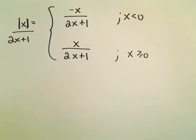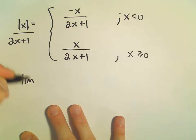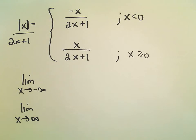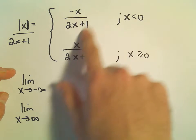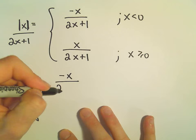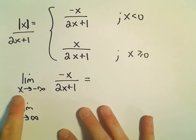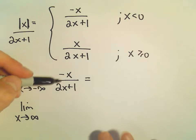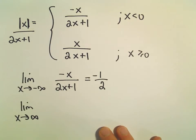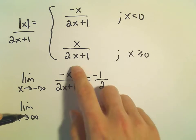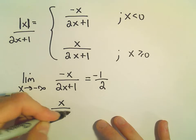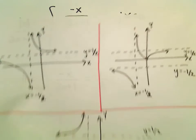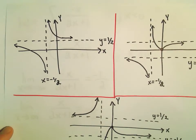If we wanted to think about horizontal asymptotes, we could look at the limit as x goes to negative infinity and the limit as x goes to positive infinity. As x goes to negative infinity, we're using x coordinates less than 0, so we use the first formula. Since the degree of the numerator equals the degree of the denominator, we can just use the ratio of the coefficients — we get negative 1 half. As x goes to positive infinity, we use the second formula and get positive 1 half.